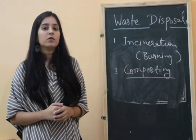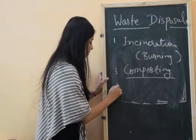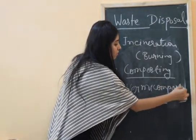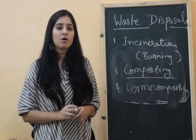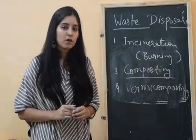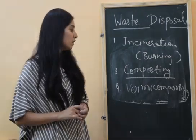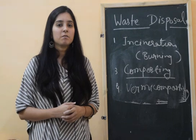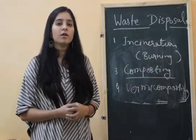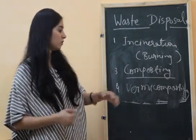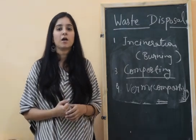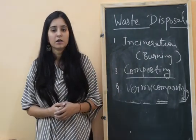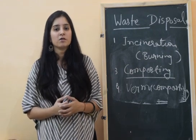Sometimes we also use earthworms, and that method is called vermicomposting. Earthworms are the friends of farmers and live inside the soil. A particular species called redworms is used; they convert biodegradable materials into a humus-like manure which is useful for plant growth and provides nutrients. The vermicomposting and composting processes are generally done at temperatures of 12 to 25 degrees centigrade. By using all these methods, we can reduce waste from the land. Thank you.